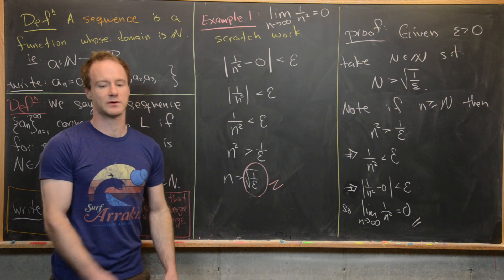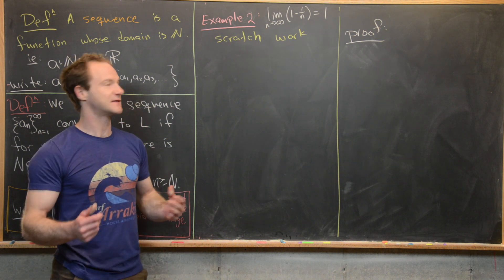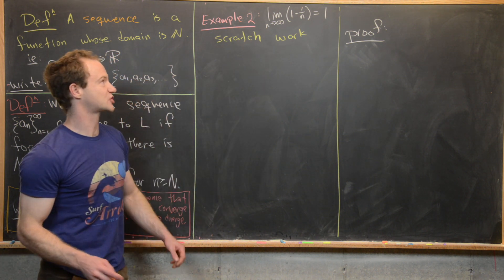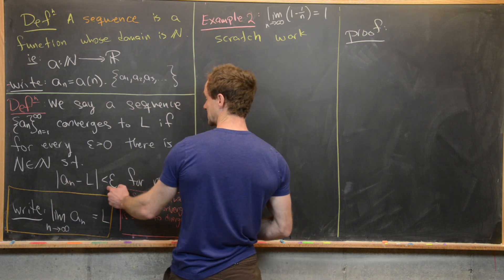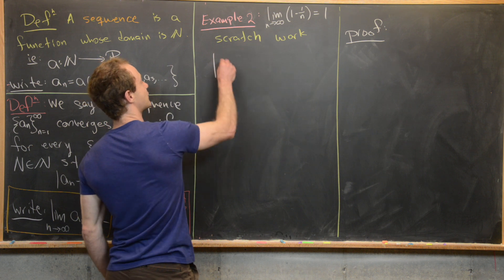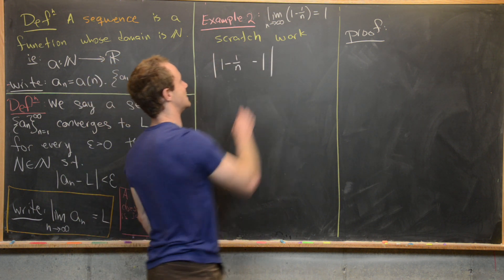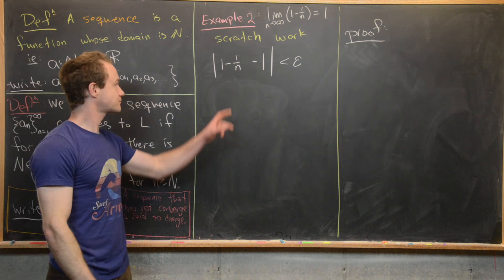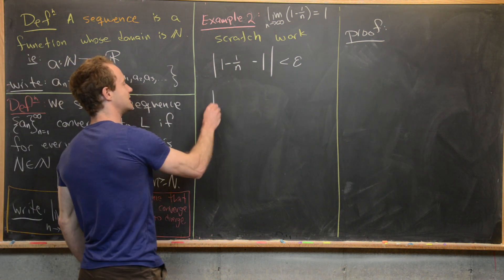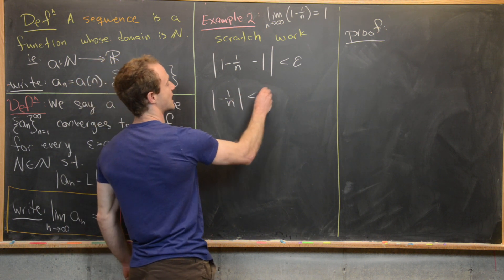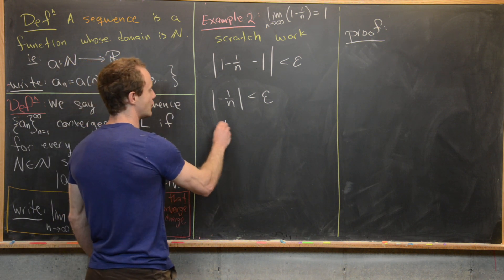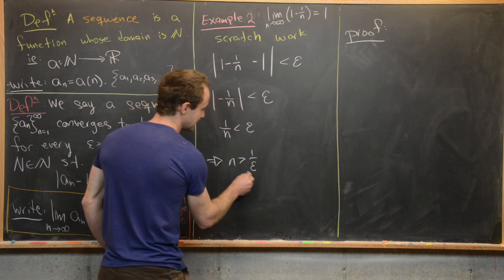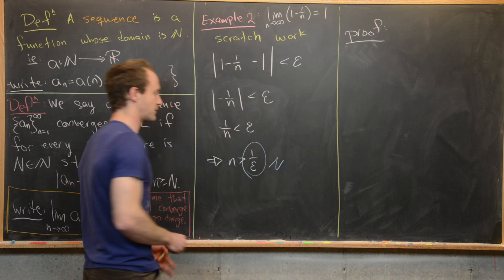For our next example, we look at the sequence defined by 1 minus 1/n and show the limit equals 1. In the scratch work, we start with the absolute value of (1 - 1/n) minus 1 being less than epsilon. The 1 and -1 cancel, leaving the absolute value of -1/n less than epsilon, which simplifies to 1/n less than epsilon, and therefore n greater than 1/epsilon. This 1/epsilon will be our proposed capital N.